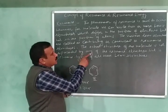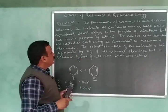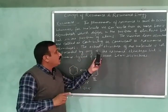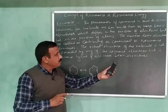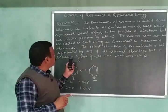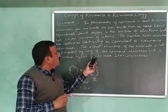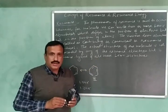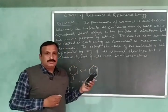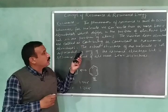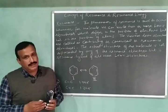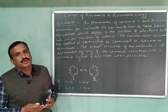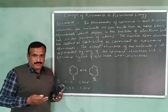The actual structure of the molecule is not represented by any of the resonance structures — it is the resonance hybrid of all these Lewis structures. Now let us understand this concept of resonance with the help of an example, and the most commonly studied example is that of benzene.